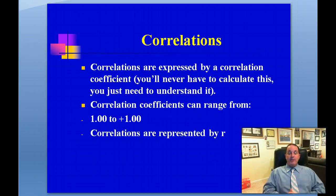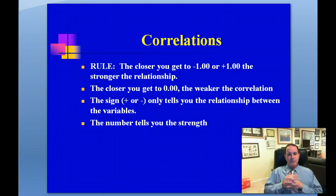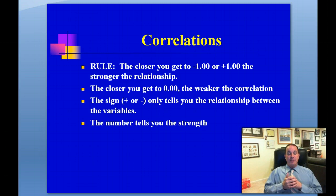Correlations are expressed by a correlation coefficient, represented by lowercase r. You'll never have to calculate this, but you need to understand it. Correlations can range from negative one to positive one. The closer you get to either negative one or positive one, the stronger the relationship. The closer you get to zero, the weaker the correlation — with zero representing no relationship at all between the variables.